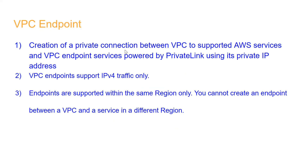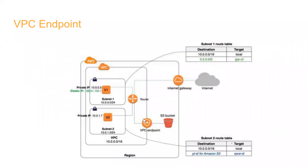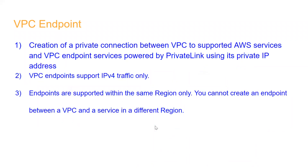VPC endpoint creates a private connection between VPC and supported AWS services - done through AWS PrivateLink, meaning no internet in between. VPC endpoint supports IPv4 traffic only (private). IPv4 is private; IPv6 has public access. Endpoints are supported within the same region only - you cannot create an endpoint between a VPC and services in a different region.